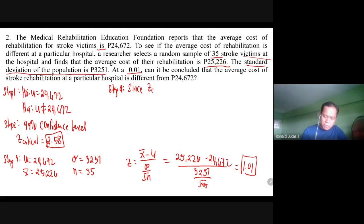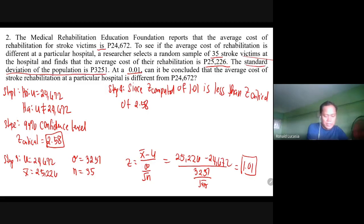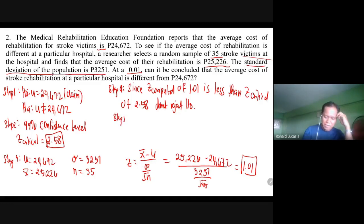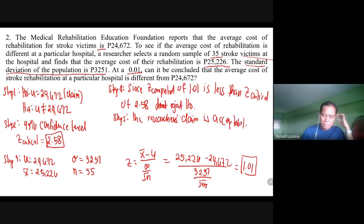Step four: since Z-computed of 1.01 is less than Z-critical of 2.58, the decision is: do not reject H₀. The claim here was H₀, so since we do not reject H₀, step five: the researcher's claim is acceptable.